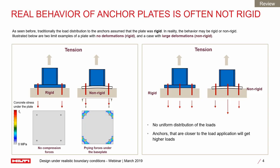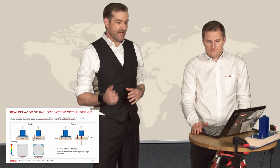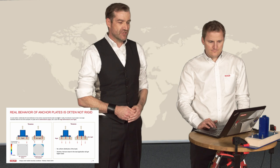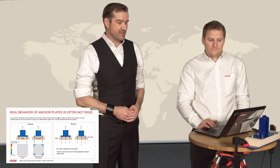Another example: if we have only tension on the column, in the rigid baseplate case you have an equal load distribution to all anchors. But if you have a non-rigid baseplate you have a less stiff system, meaning the middle anchor would be loaded much higher compared to the others — which would not be taken into account in your original design. Even under tension, a non-rigid baseplate may lead to higher anchor forces completely different from the original assumption.